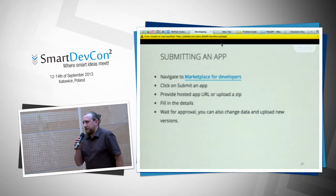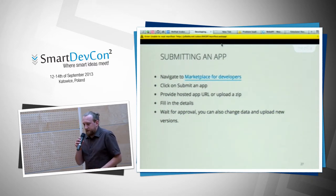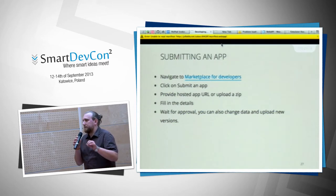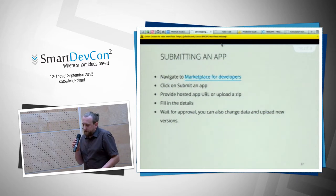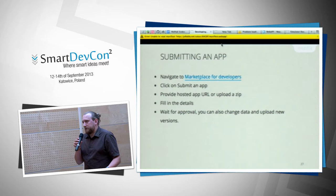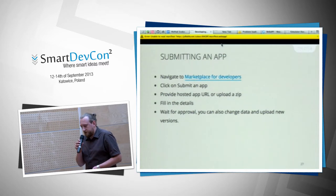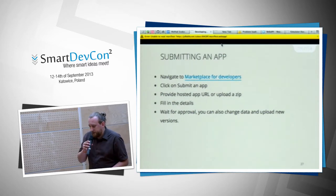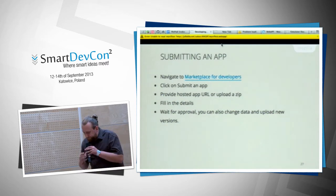The process to submit an app is fairly easy. You navigate to the marketplace for developers, click the submit app button, and provide either a hosted URL or upload a zip. The marketplace validates the app and flags any issues, then you add the details and wait for approval.